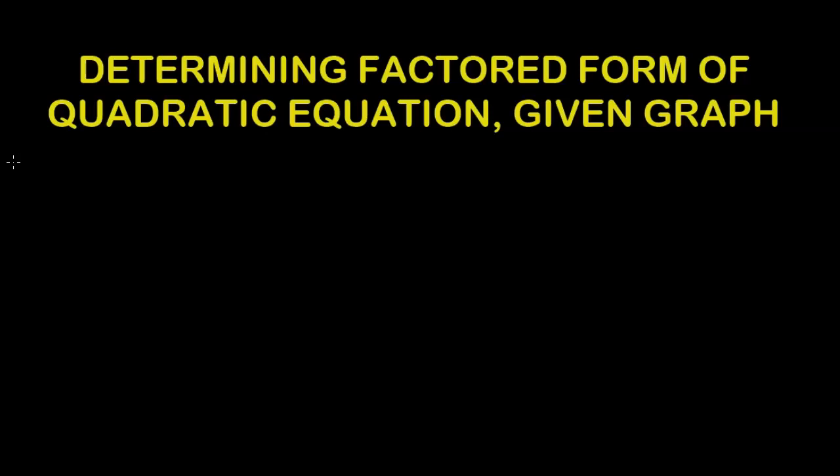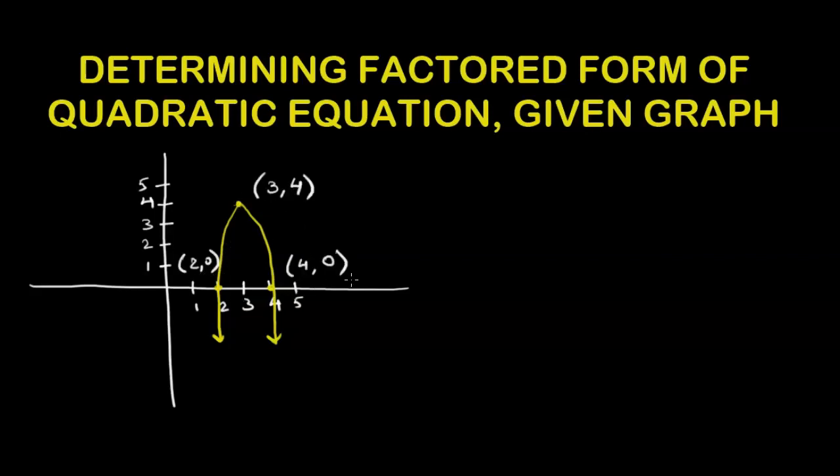Let's say we're given a graph of a parabola as follows and we are asked to write the equation of this graph. We're given the vertex as (3, 4) and the x-intercepts as (2, 0) and (4, 0) respectively.